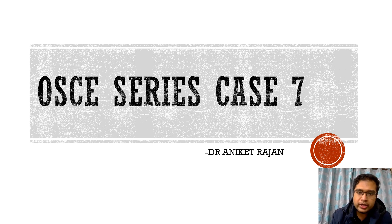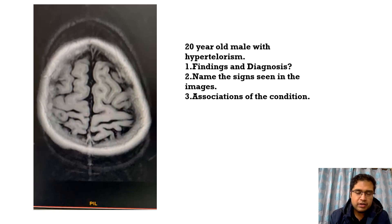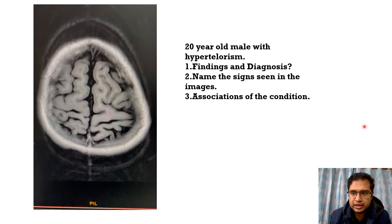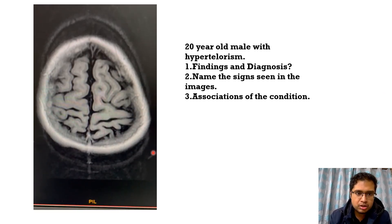Hello everyone, welcome to case 7 of this OSCE series. Here we have a 20-year-old male with facial dysmorphism or hypertelorism, and an MRI brain was ordered for this patient. These are the MRI brain pictures.